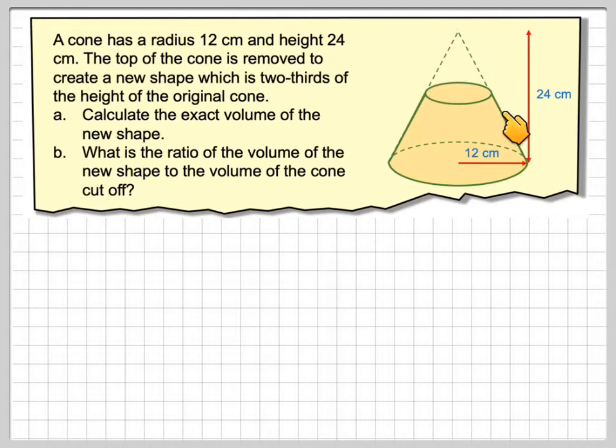So what you've got here is a big cone and this small cone here is removed and you get this solid shape here. This is called a frustum.